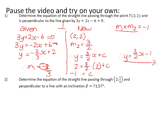Number 2. Determine the equation of the straight line passing through (2, 1/3) and is perpendicular to a line with an inclination β = 71.57°. So we've been given some information about a graph and we need to find the equation of a new graph.